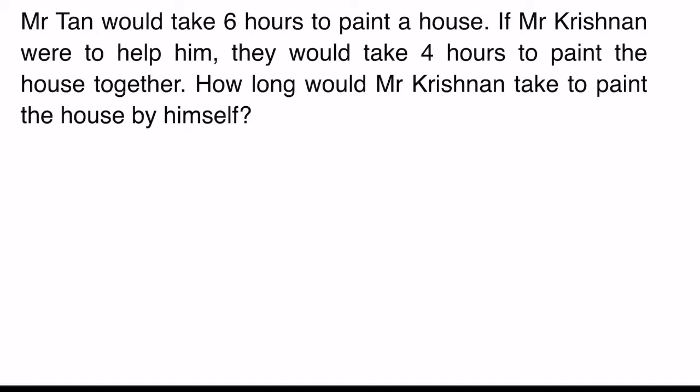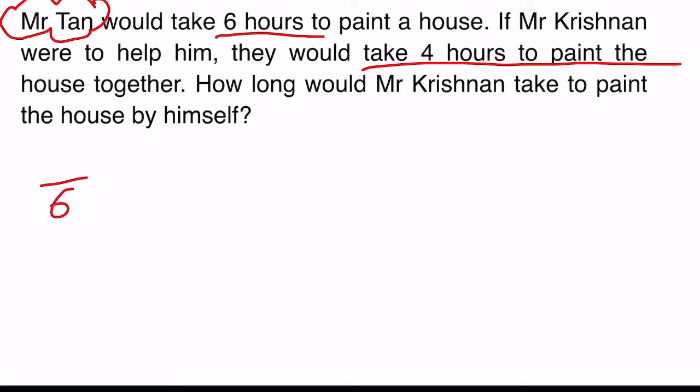Let's take a look at this question. These are the key phrases. If I were to assume that Mr. Tan took four hours to paint the house together with Mr. Krishnan, the fraction of him painting the house is out of six, because he can use six hours to paint the entire house. But instead, with Mr. Krishnan helping, he's actually only using four-sixths.